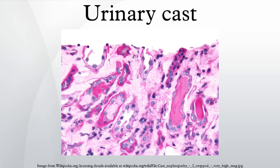Granular casts are the second most common type of cast. They can result either from the breakdown of cellular casts or the inclusion of aggregates of plasma proteins or immunoglobulin light chains. Depending on the size of inclusions, they can be classified as fine or coarse, though the distinction has no diagnostic significance. Their appearance is generally more cigar-shaped and of a higher refractive index than hyaline casts. While most often indicative of chronic renal disease, these casts, as with hyaline casts, can also be seen for a short time following strenuous exercise.